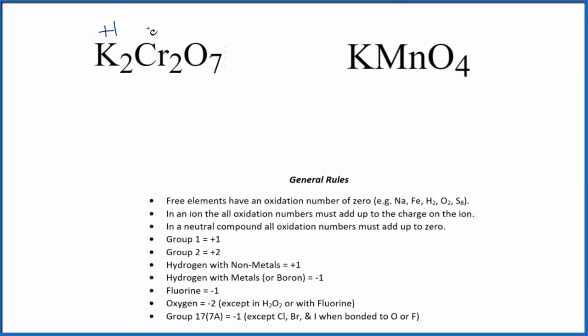We don't know what the chromium is here. Let's just call that X, and then oxygen, that's going to be negative 2. It's always negative 2 with just a few exceptions.